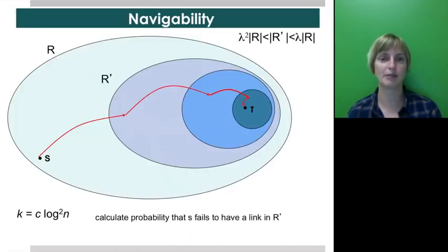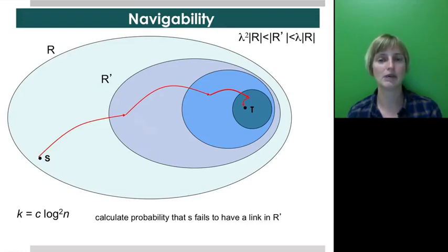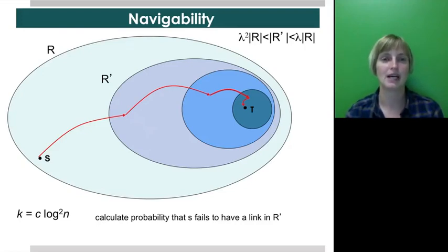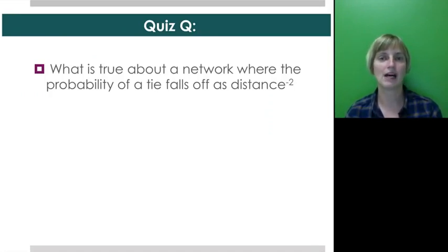This is the concept of navigability — does the placement of the edges allow you to make some amount of progress towards your goal at each step? What Kleinberg proved was that if the exponent r is 2, that is the probability of linking to someone falls as 1 over the distance squared, then you can make enough progress at each step such that the number of steps only grows logarithmically. Quiz question: what is true about a network where the probability of a tie falls off as distance to the minus 2?